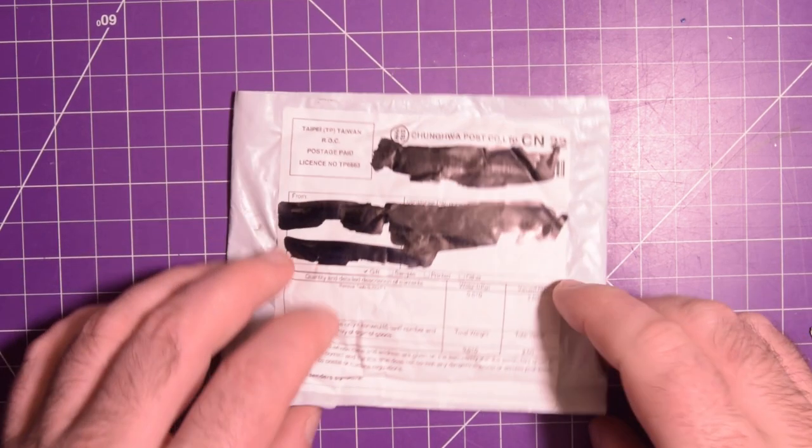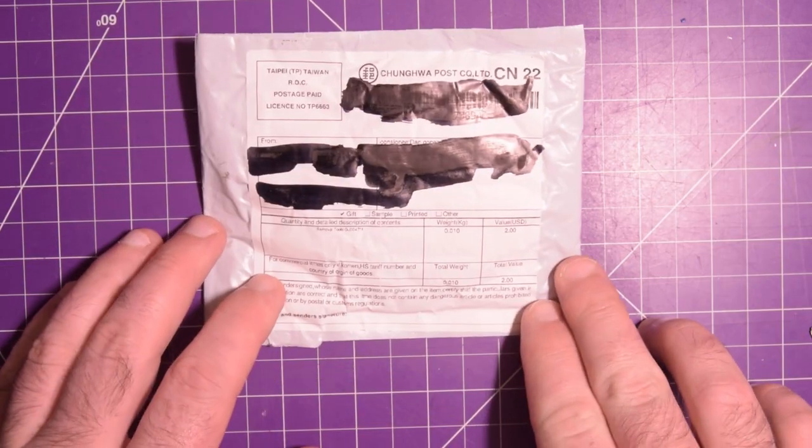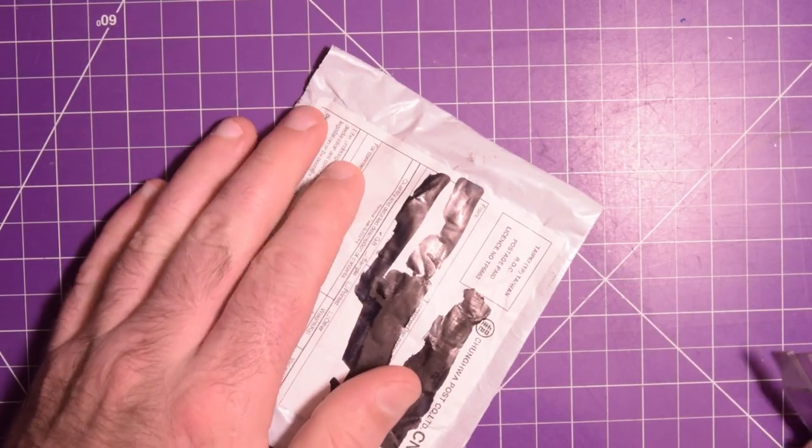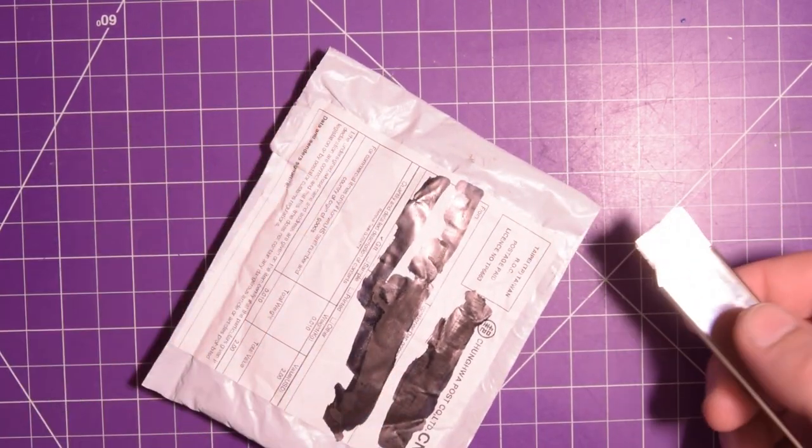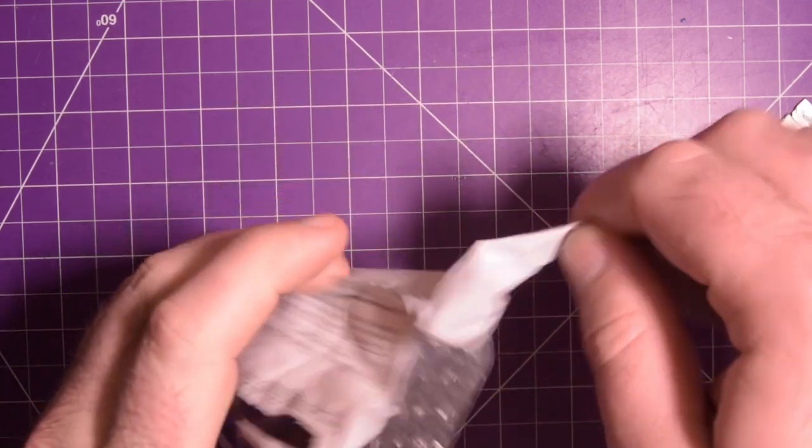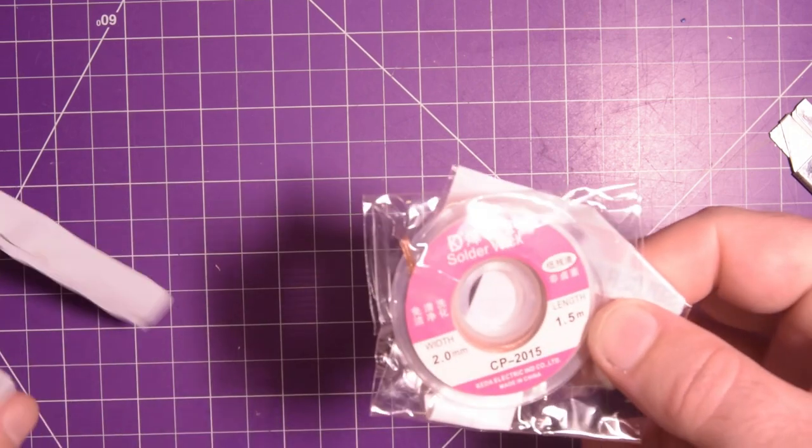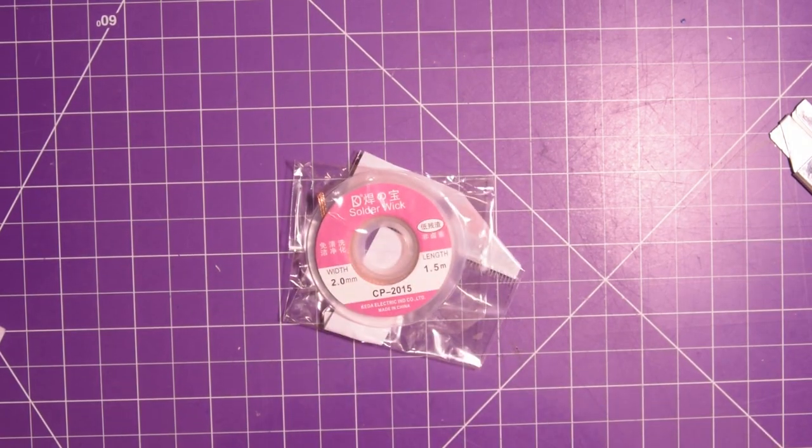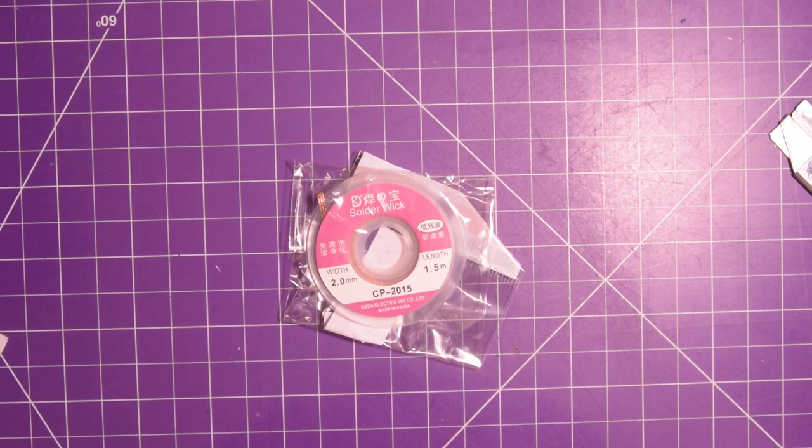Next up we've got this little guy here. It says removal tool. This could be something I bought on purpose, could be something I bought for cheap as an auction. Let's take a closer look at that.